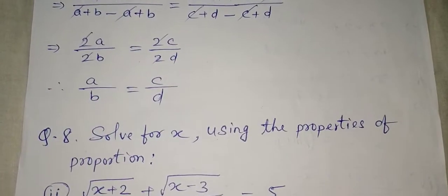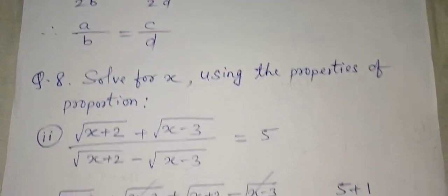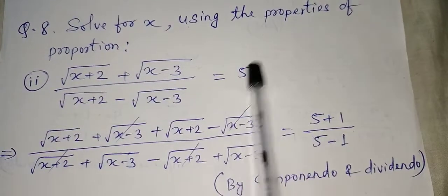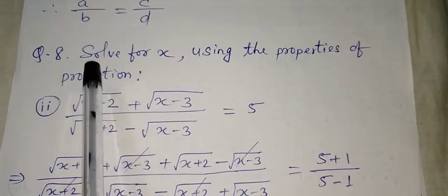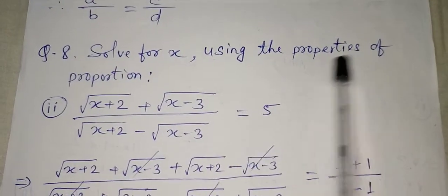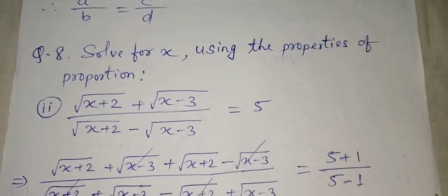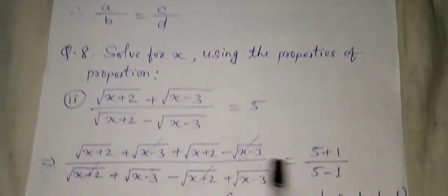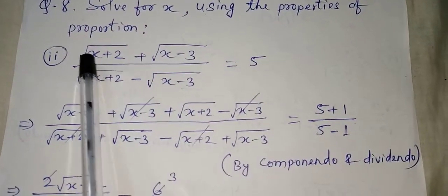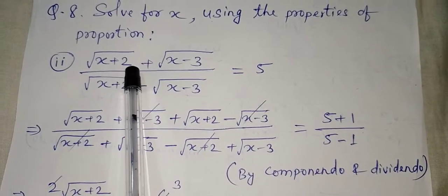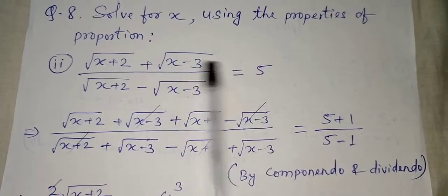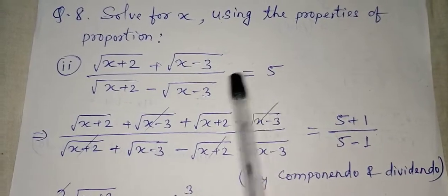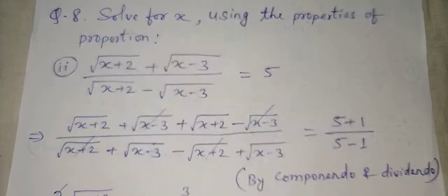So that is our result. Now we will apply the same componendo and dividendo here to solve for x. The question is: solve for x using the properties of proportion. The question is: (√(x+2) + √(x-3)) / (√(x+2) - √(x-3)) = 5. We have to find the value of x.